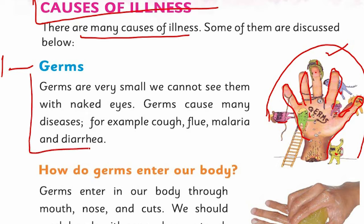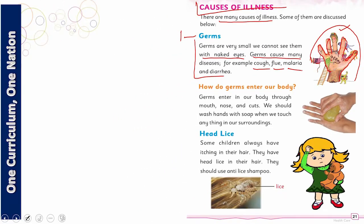Germs are very small — we cannot see them with the naked eye. Germs cause many diseases, for example, cough, flu, malaria, and diarrhea. These days you hear about COVID-19, which is a coronavirus that appeared at the end of 2019 — that is why we call it COVID-19. It causes cough and flu in our body, and if left untreated, it can become dangerous.